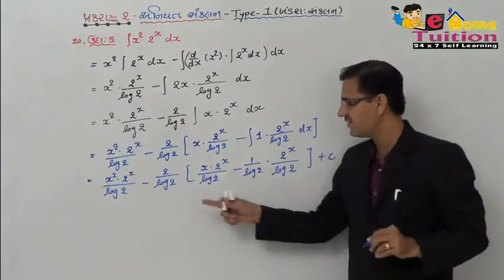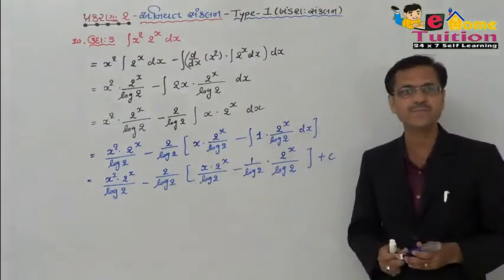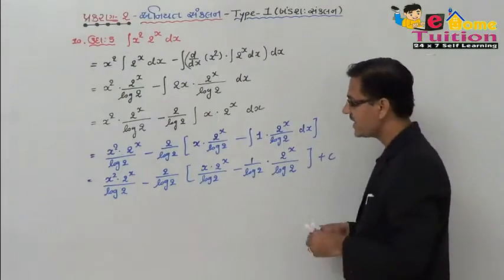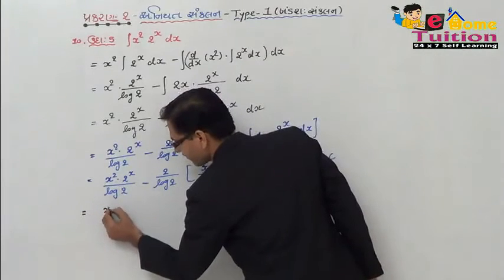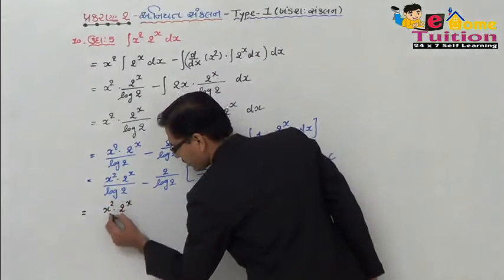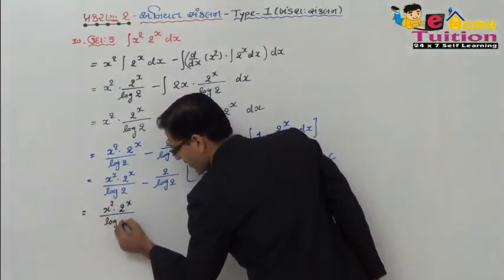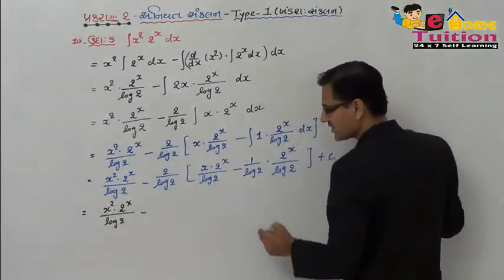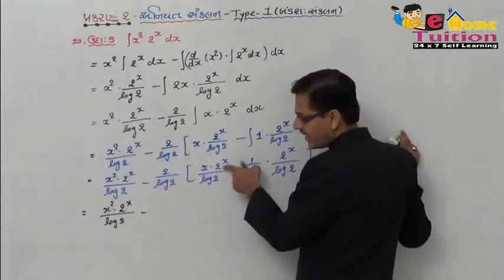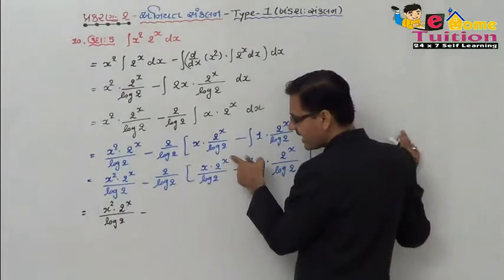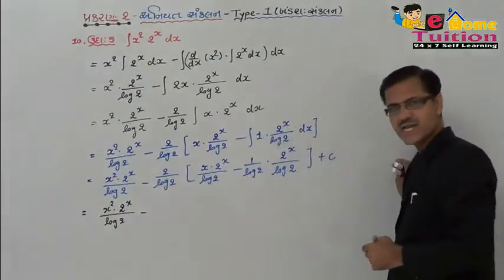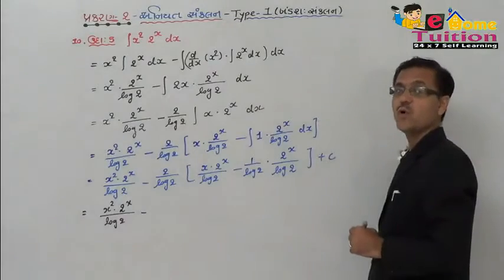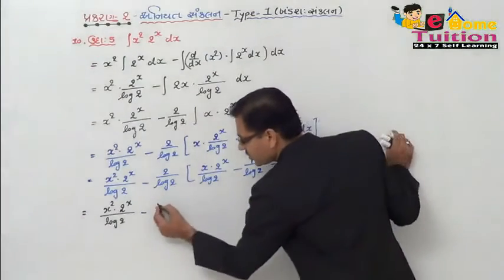plus c. This is complete. This is the same. x square, 2 raise to x upon log 2 minus 2 in here. 2 and 2 — this is the same, so x is the same plus c. And here log 2, log 2, log 2 whole square — ok, the job.